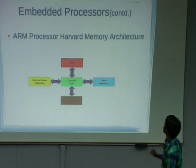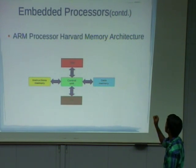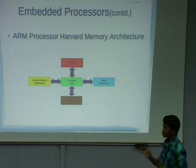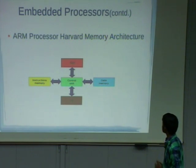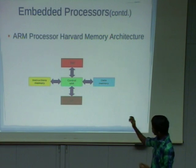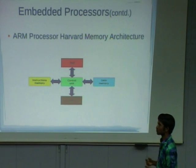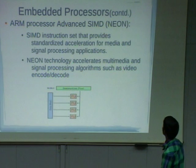Now coming to Harvard memory architecture. The design of this Harvard memory architecture is that the processor should have two separate memories: one for storing instructions and another for storing data. One advantage is that if two processes use the same set of instructions, we don't need to fetch them from memory twice.